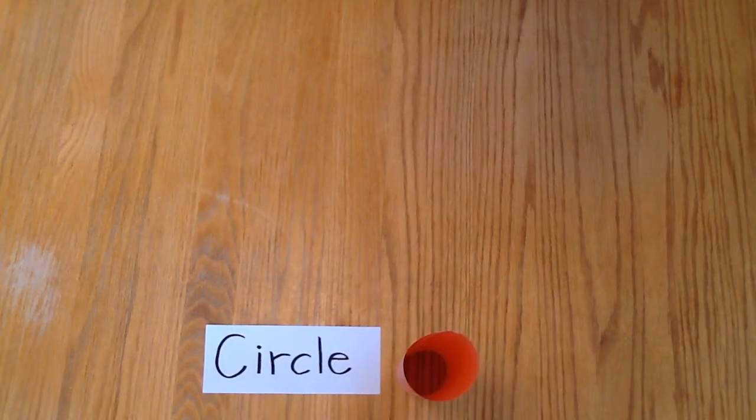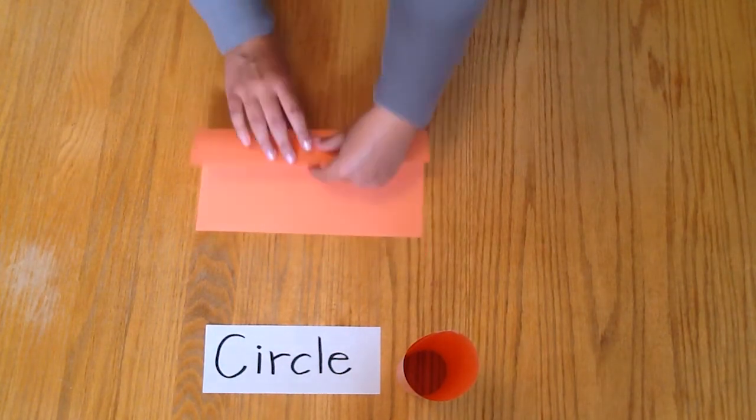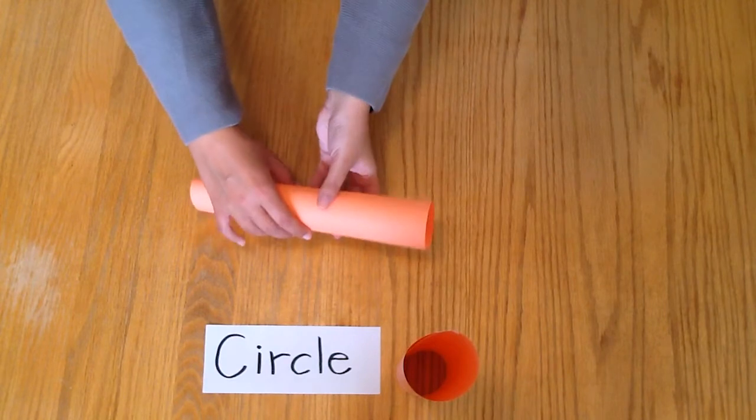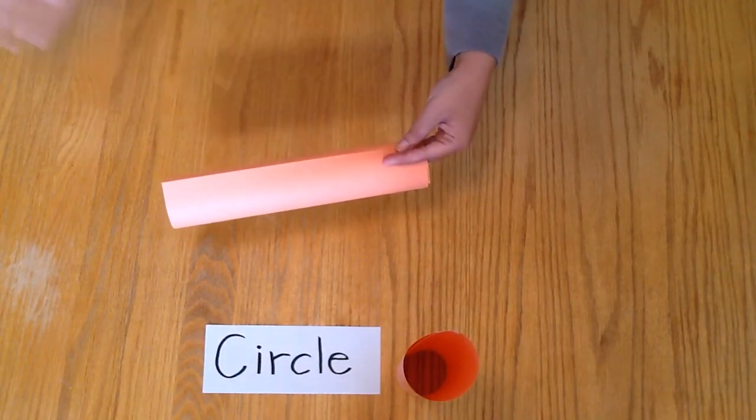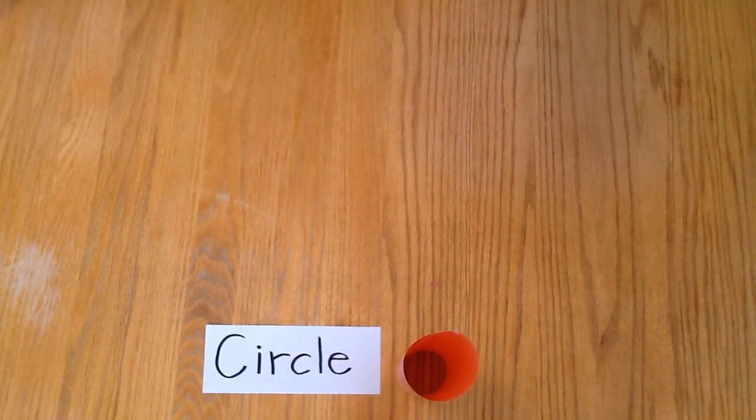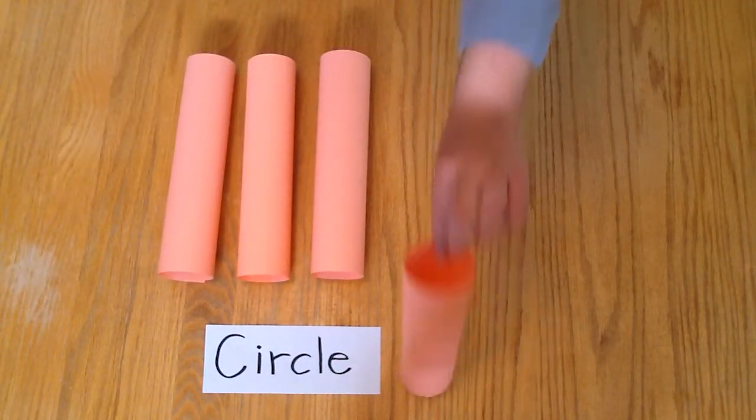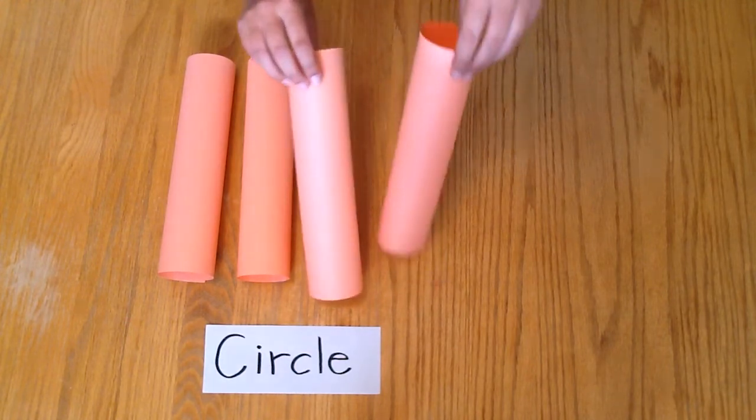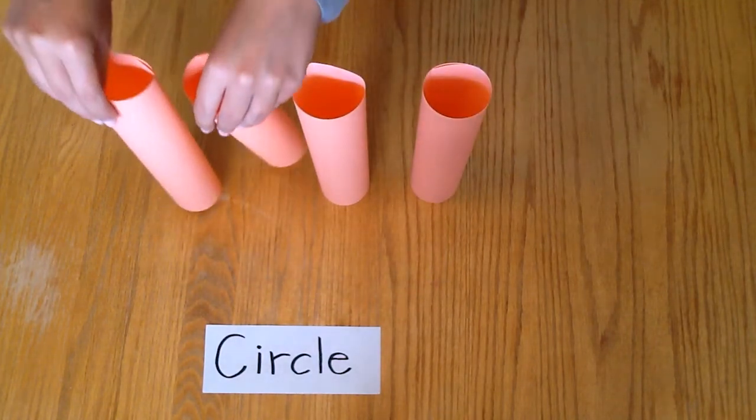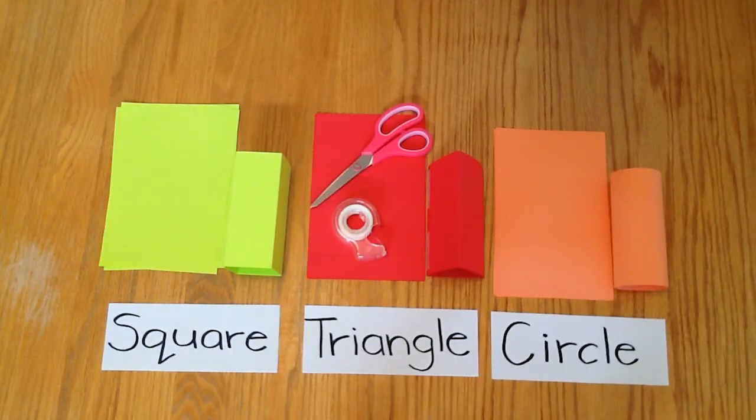The last shape column you will be making is a circle or cylinder. Take your piece of paper and roll it into a cylinder or tube. Secure the edges with tape. Repeat this until you have a total of four circle columns. Great job on folding each of the different shaped paper columns.